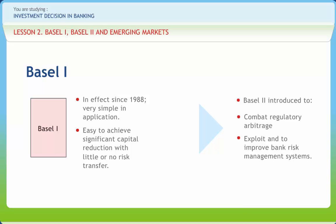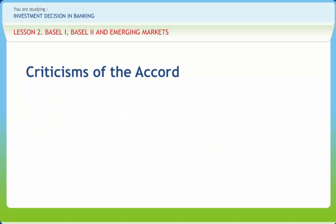Credit risk was divided into five categories: 0%, 10%, 20%, 50%, and 100%. Commercial loans, for example, were assigned to the 100% risk weight category. The accord was hailed for incorporating risk into the calculation of capital requirements. To calculate required capital, a bank would multiply the assets in each risk category by the category's risk weight and then multiply the result by 8%. Thus, a $100 commercial loan would be multiplied by 100% and then by 8%, resulting in a capital requirement of $8.